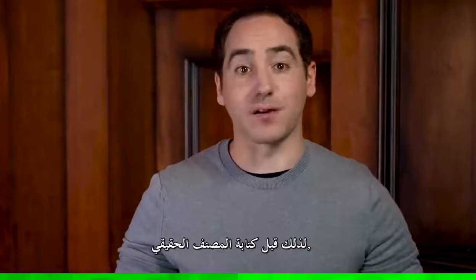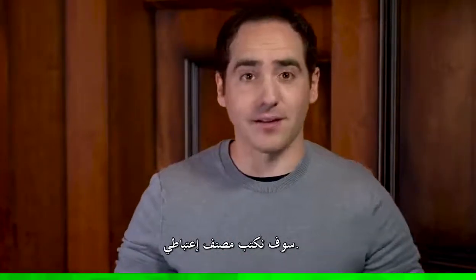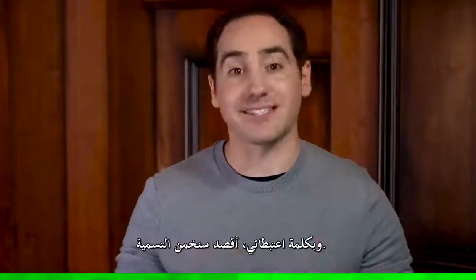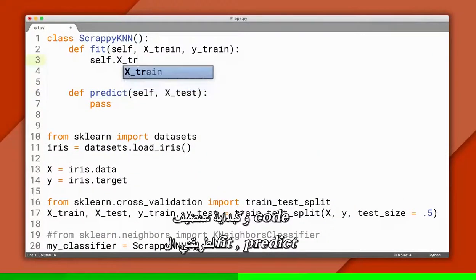So before we write our real classifier, we'll start with something simpler. We'll write a random classifier, and by random, I mean we'll just guess the label. To start, we'll add some code to the fit and predict methods.